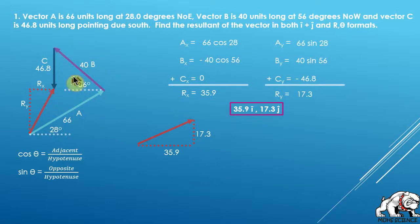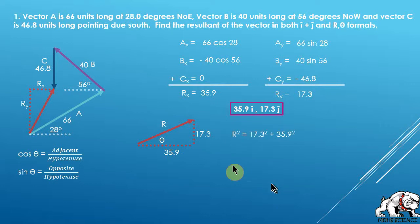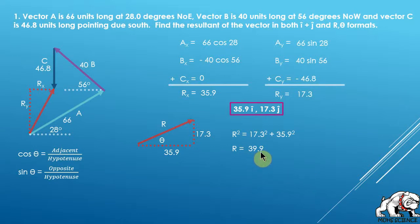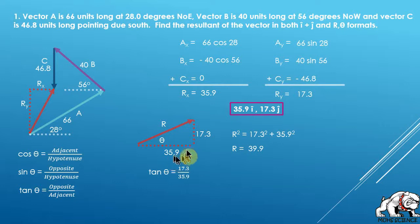Now I solve for r and theta. The resultant magnitude r is straightforward using the Pythagorean theorem: r² = Rx² + Ry², so take the square root. That gives r = 39.9 units. For theta, I use the tangent function because I know both legs of the triangle — Rx and Ry are the adjacent and opposite sides.